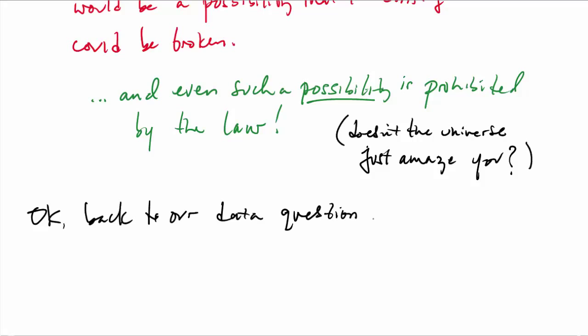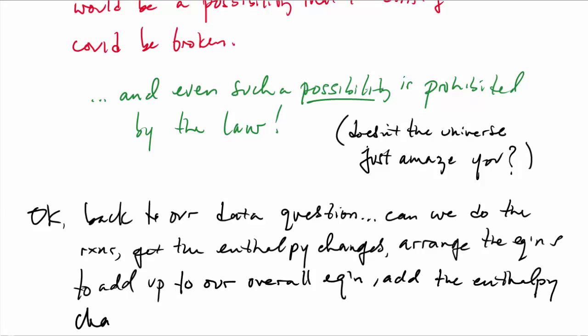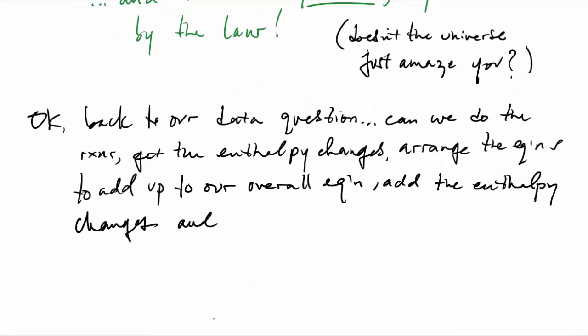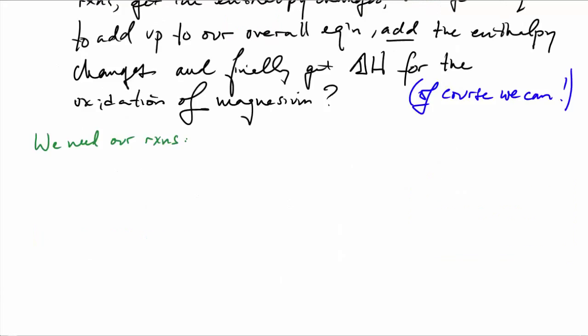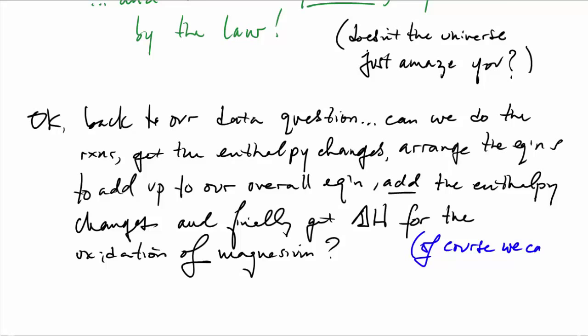So let's get back to our example here and see what happens. Can we actually do these reactions and get the enthalpy change and work out the enthalpy for our overall reaction of the magnesium oxide combustion? Remember, we have to arrange them all and add them all up and add up all the enthalpies and make sure we keep the signs going the right directions, and finally get the delta H for our oxidation of magnesium oxide.